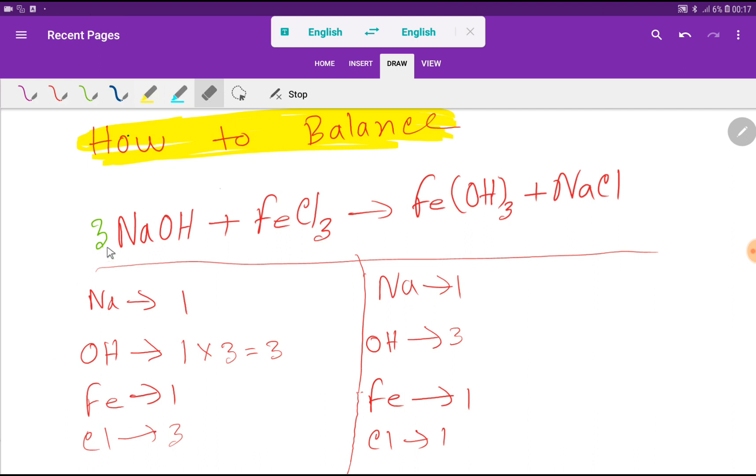So now we have to update the number of sodium. So we are getting here 3 sodium. So we have to write here 3 sodium. And already we have 3 hydroxide.